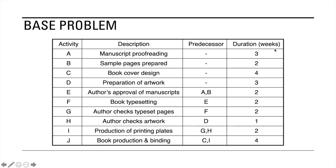The other assumption we need to make is that this duration is constant. We are sure, for example, that activity A will last three weeks, or that for you to be able to do manuscript proofreading, you need exactly three days. However, that is one very big assumption because in reality, I don't think there is an activity where we can be very sure of its activity duration.